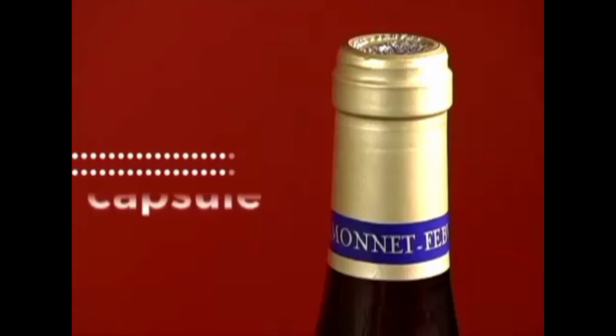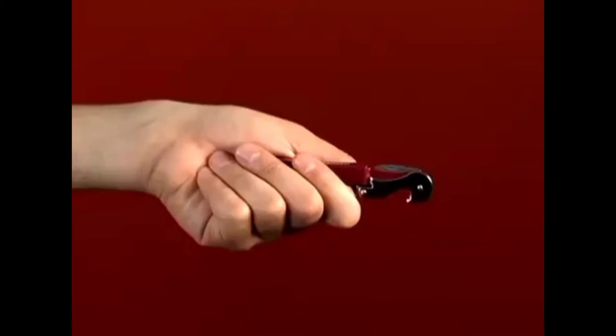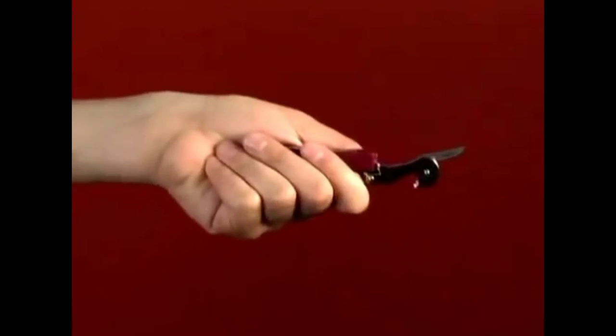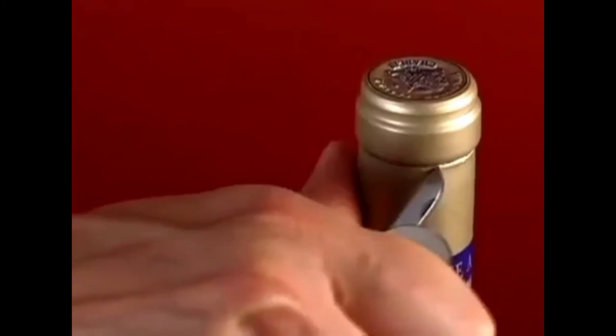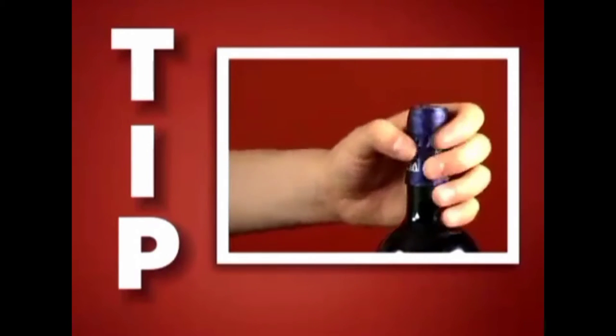First, you need to deal with the capsule. Open the blade and hold the corkscrew in your dominant hand. Use the blade to cut around the capsule. The lip is your guide. Then, lift off the top. Make sure to close the blade as soon as you're done with it. If the capsule is loose or torn, remove the whole thing.